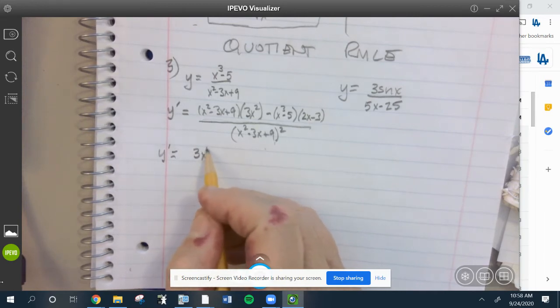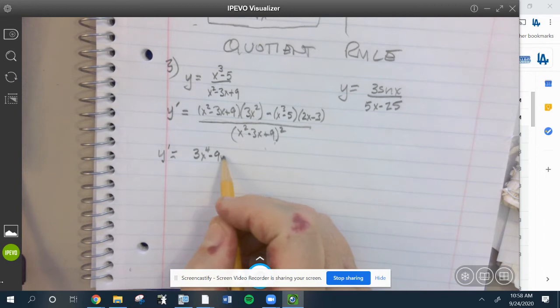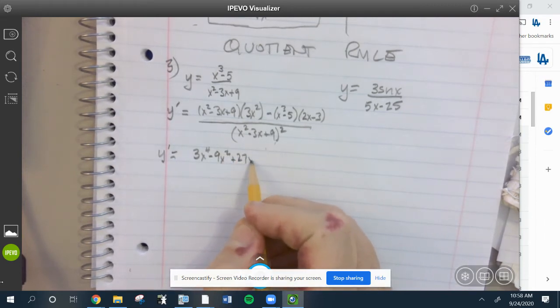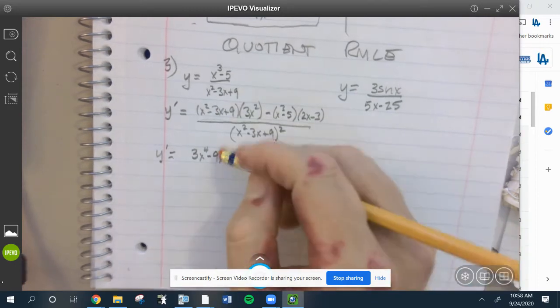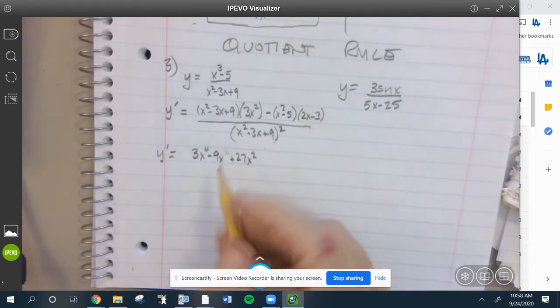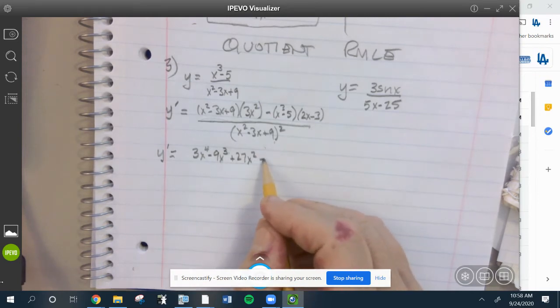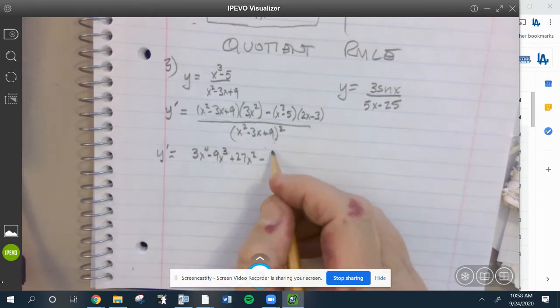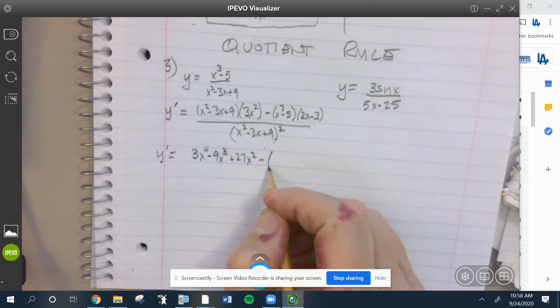Distributing the 3x squared, you get 3x to the fourth minus 9x cubed. Be careful here - this is x cubed. And it's minus the quantity, so whatever you get from your foiling, you're going to have to distribute that negative eventually.